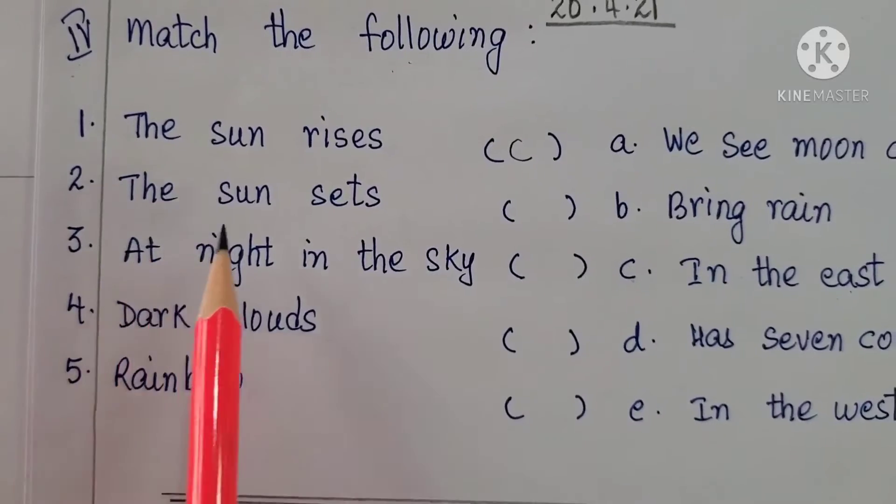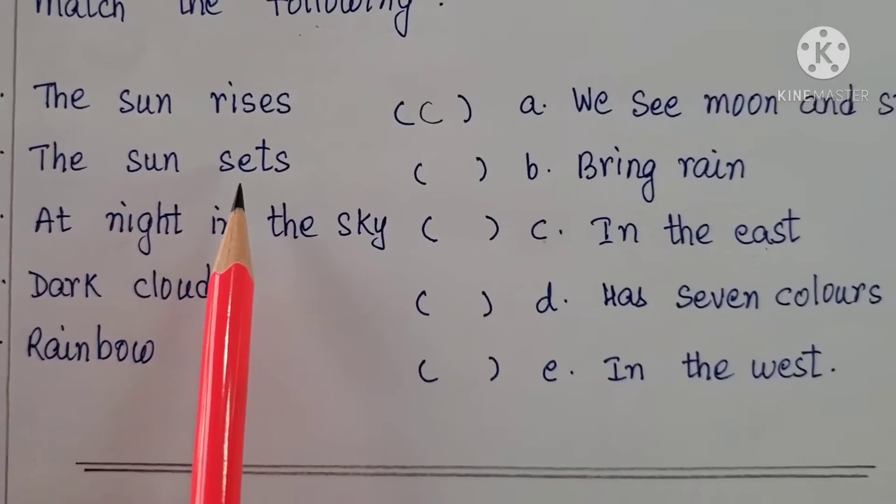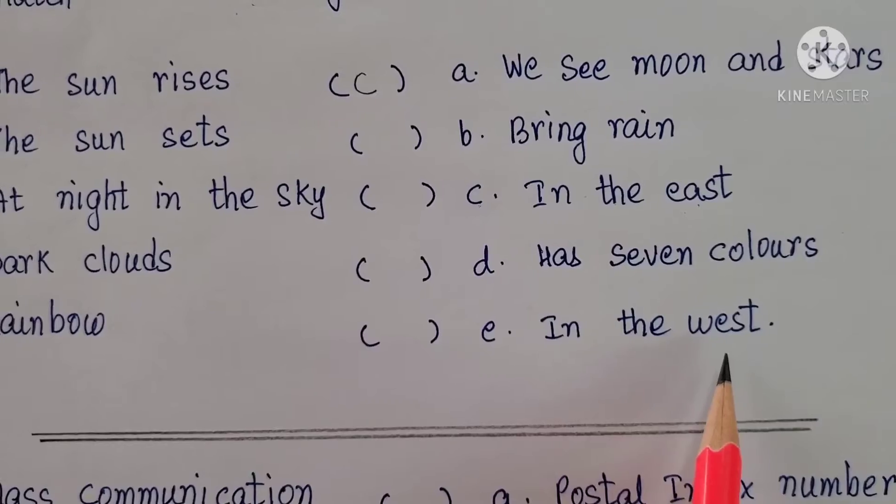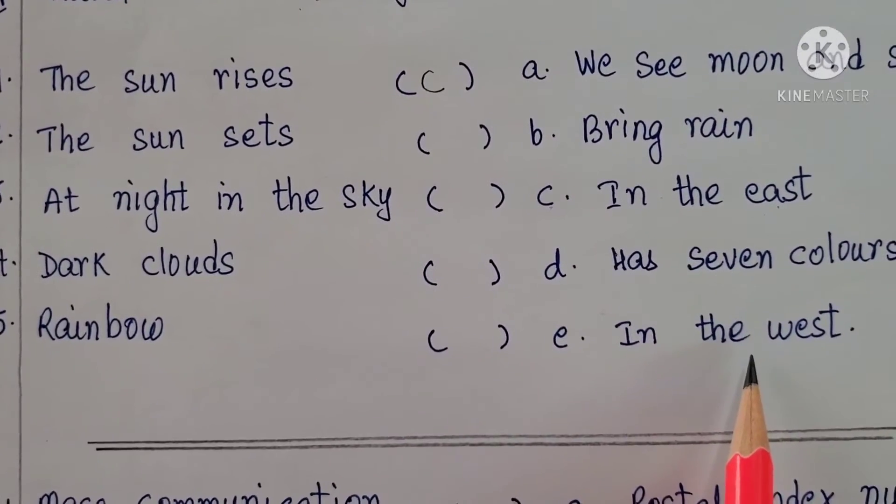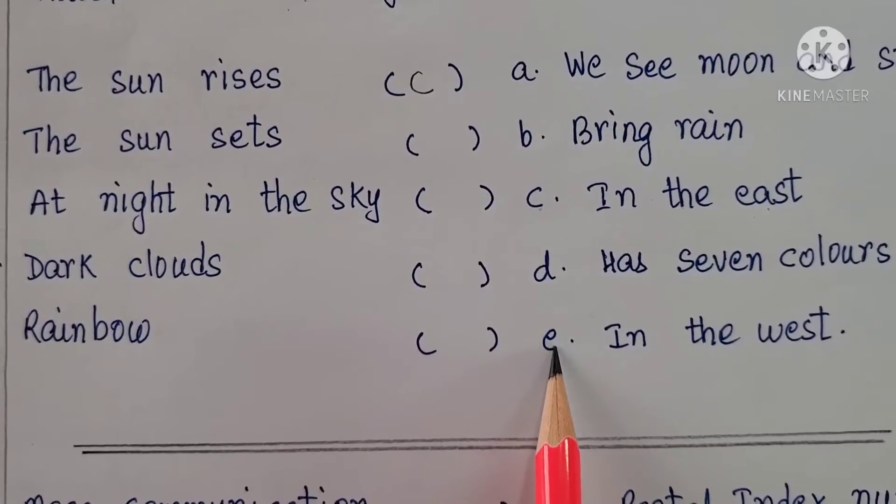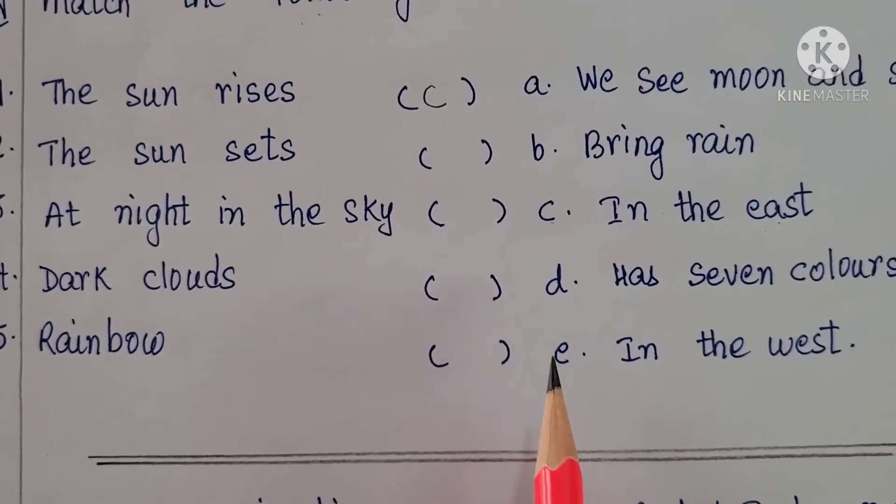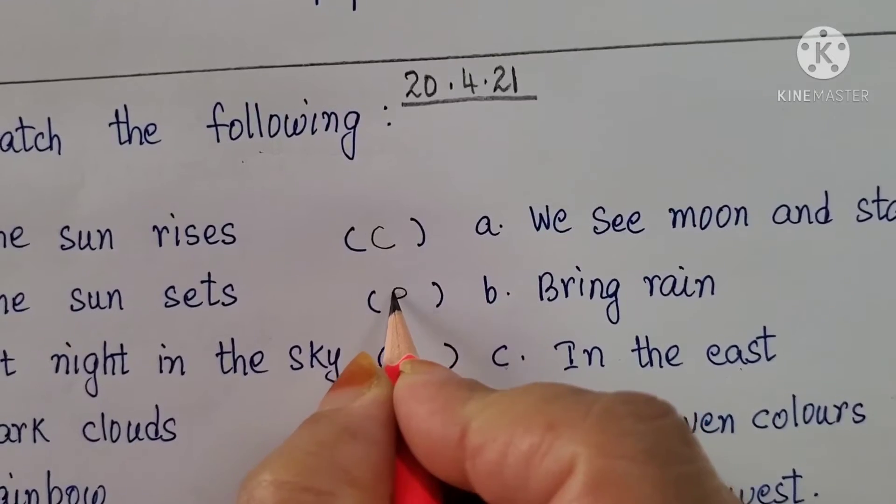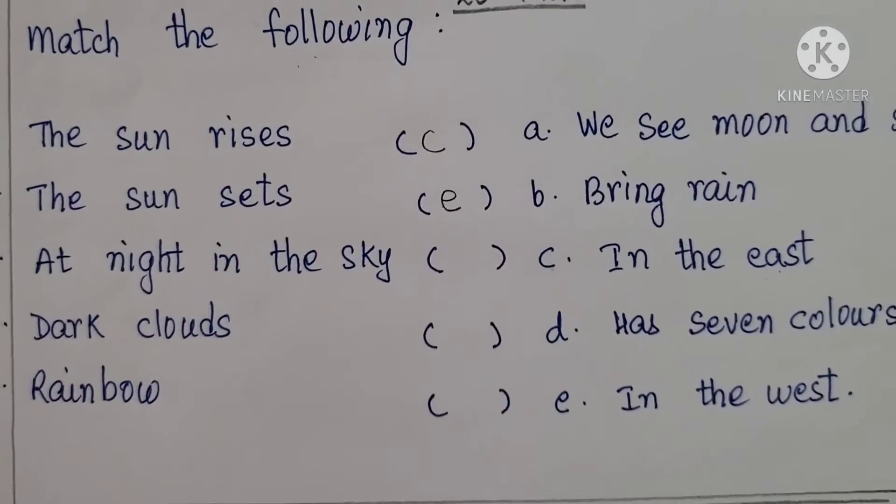Second one. The sun sets. Where does the sun sets? In the west. Where does the sun sets children? In the west. Which alphabet is this? E. So you all need to write here E.